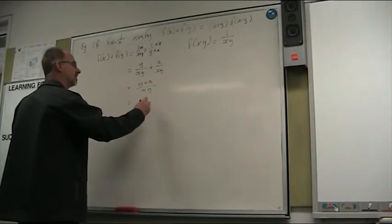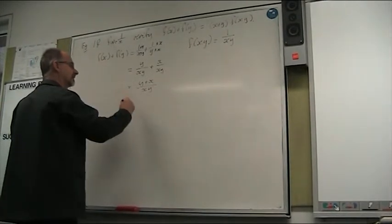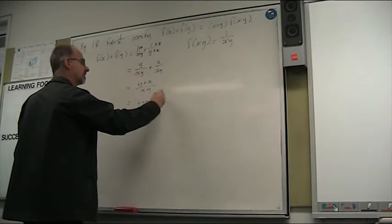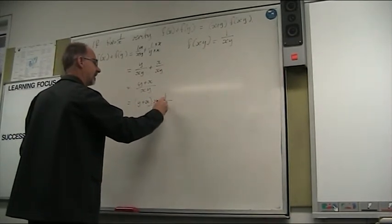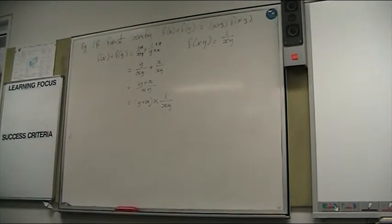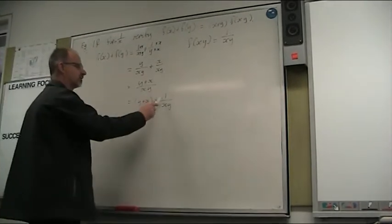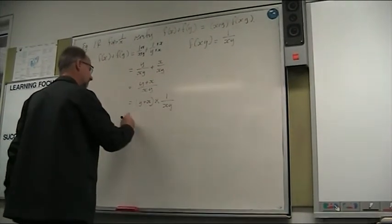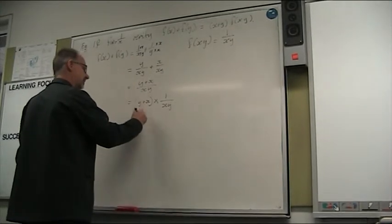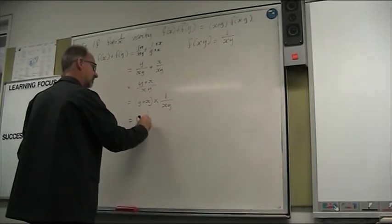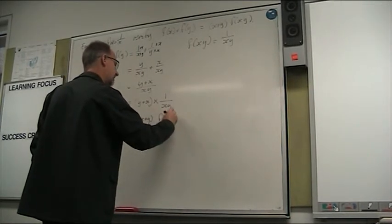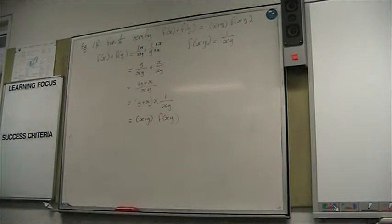Okay, so another way of thinking about this here is that that's y plus x times 1 over xy. And 1 over xy is f of xy. So normally we would write that with the x at the front, x plus y times f of xy. And that has now verified what we're asked to verify.